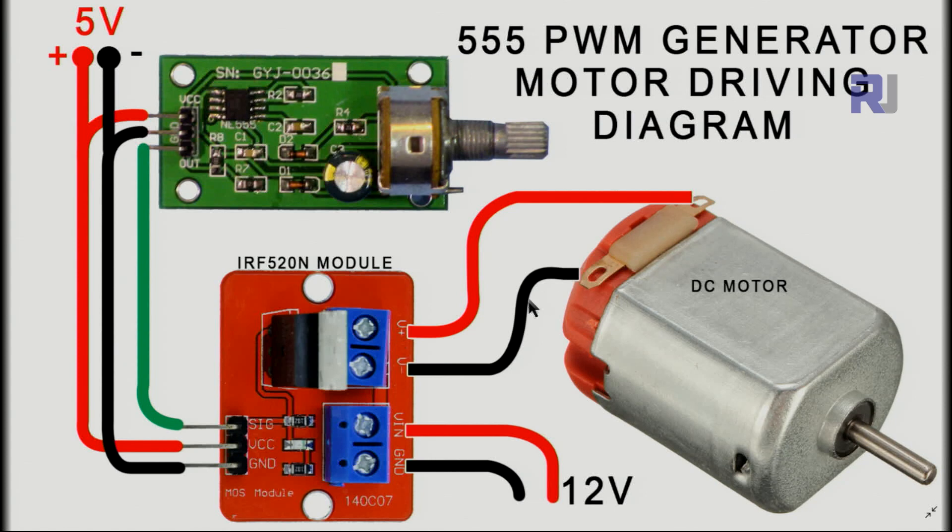And here is the wiring, how I have connected it to the motor. This is the module, the 3 pins that it has: VCC is connected to 5 volts, ground is connected to the ground, and the signal out is connected to SIG, or signal pin, of this module. I have another video explaining how to use this one, I'm not gonna talk about it.